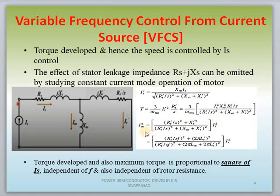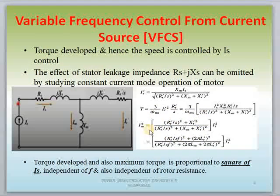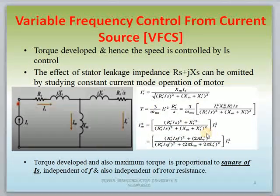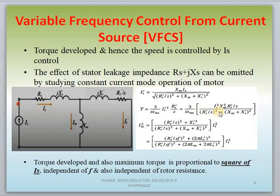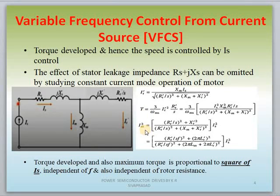With that, we can write the torque equation also. IM² is nothing but IS² times the relevant equation parameters. From the analyzing part, we can identify that IM value depends upon IS parameter, because IM is the flux producing component. So IM value depends upon IS, and torque value depends upon IS². That means if you are varying IS value, torque value is changed and the flux value is also changed, but you have to maintain a constant flux.